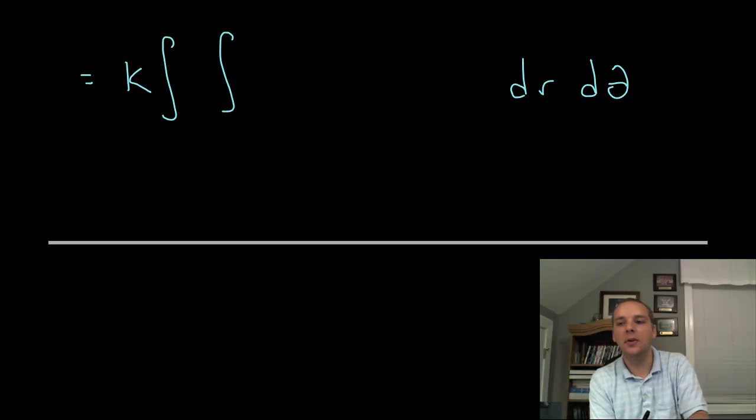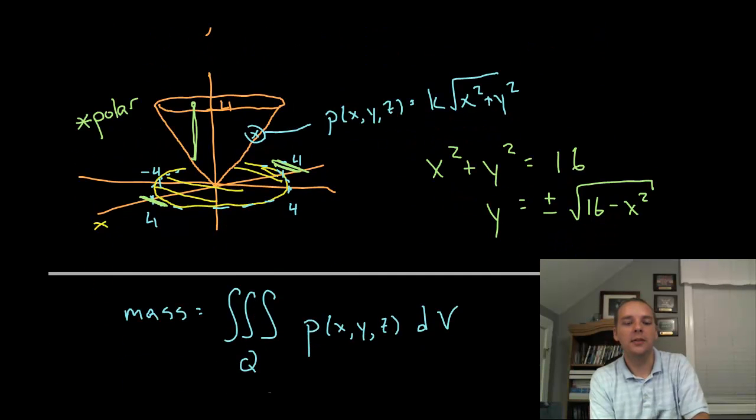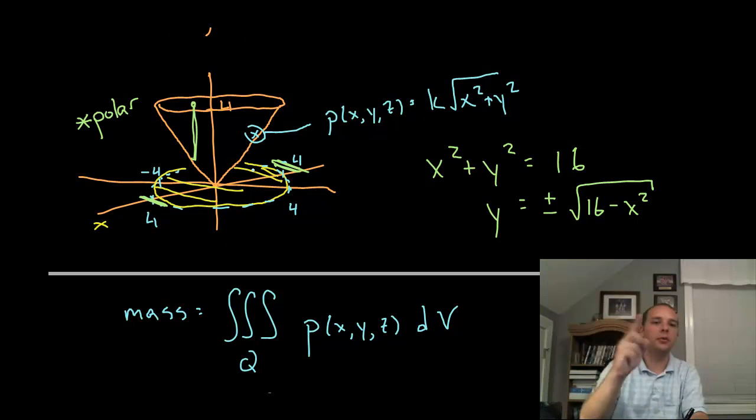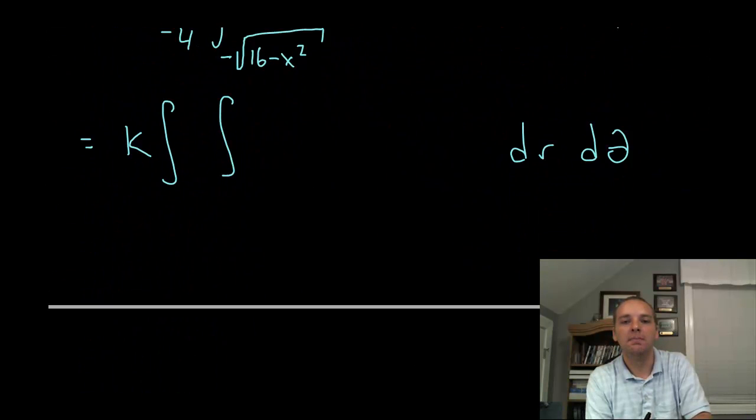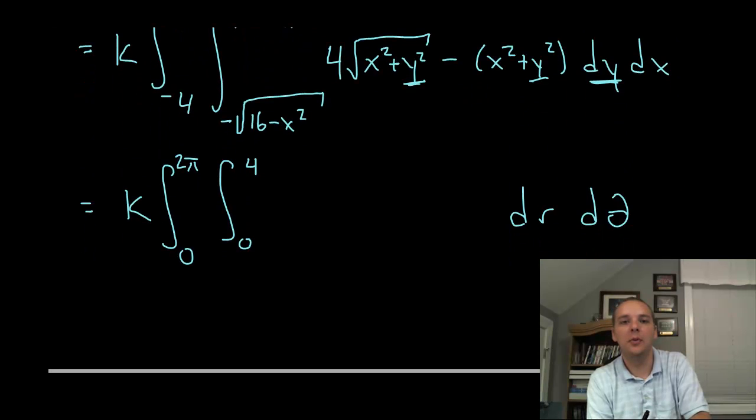Where the thetas go from, let me look at my picture. Alright this yellow region the thetas would go zero to two pi. It's a full revolution a full circle. And the radius would go from zero out to four. Zero out to four as you're spinning around from zero to two pi. And you'll paint that whole region there. Okay so d theta goes zero to two pi and the r's goes zero to four.